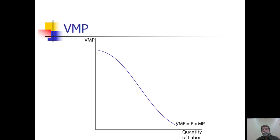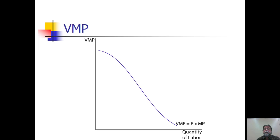While theoretically marginal product might be rising at low levels of labor use, firms would never operate in that range — if it's optimal to hire the first worker and the second worker produces more additional output, it would always be optimal to hire that second worker too. So we're only concerned with the downward-sloping portion of the marginal product curve, and therefore the downward-sloping portion of the value of the marginal product curve.